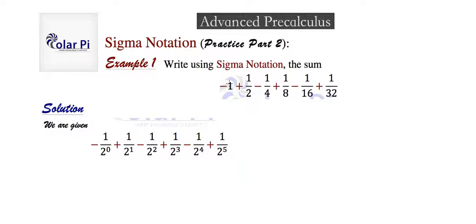First, all of the terms except for this first one are fractions, so you need to make this a fraction. And so you write negative one divided by one, that's how you turn it into a fraction. And then you see that all of the denominators here are powers of two, so you need to make the denominator of this negative one here a power of two.